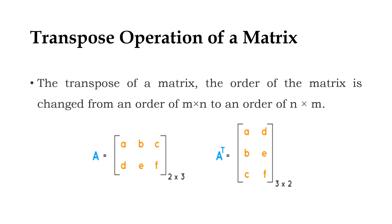Transpose operation of a matrix: A transposed matrix is obtained by replacing the rows of a matrix with its columns and the columns with the rows. This is called the transpose matrix. Here we have the elements A, B, C in the row — if we transpose this, they will become a column.